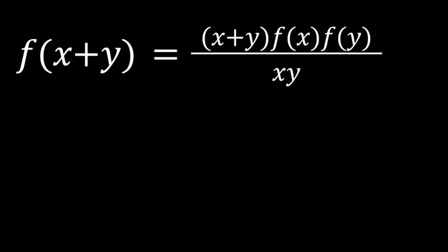First of all, x and y cannot be replaced with 0 as is because it would make our expression undefined, so let's avoid using 0. But we can probably try replacing y and x with 1. If you replace x and y with 1 at the same time you're going to get f(2) equals 2 times f(1) times f(1) divided by 1, and from here you're going to get something like this.